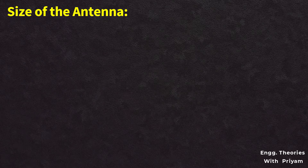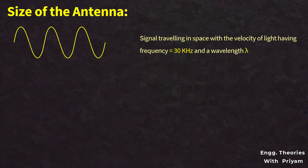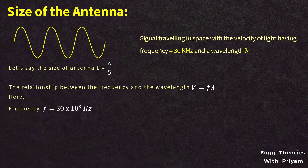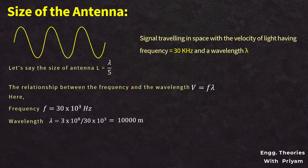Reduction in the size of the antenna: consider a signal traveling in space at the speed of light with a frequency of 30 kHz. Using the relationship V = F × λ (where V = 3×10⁸ m/s), λ = 3×10⁸ / (30×10³) = 10,000 meters. With antenna size L = λ/5, we get L = 2,000 meters. This is practically not achievable as it is highly costly and cannot withstand natural atmospheric conditions.